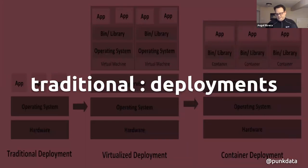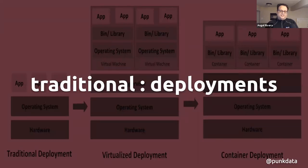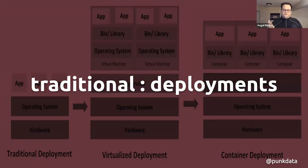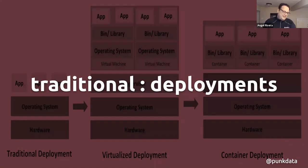Before diving into Kubernetes, let me talk about how we used to deploy software. Back in the 90s when I started, we did traditional deployments — multiple applications running on a rack of servers. That was fine until you needed to scale. If your application load increased, the only way to scale was literally to buy new servers, new storage, new memory, new rack, new network switches, and install all of that.